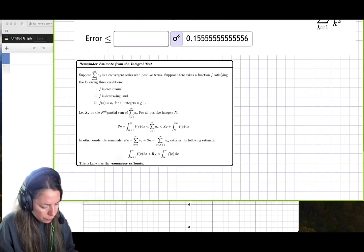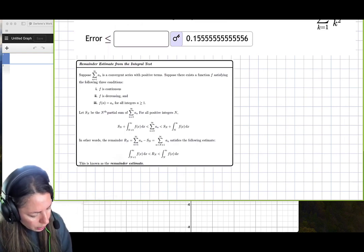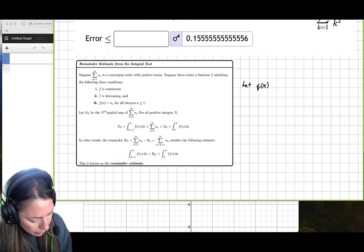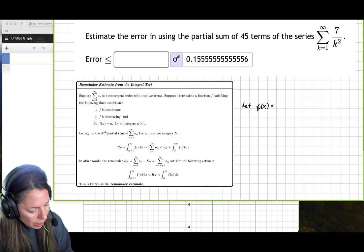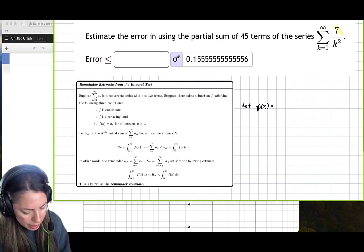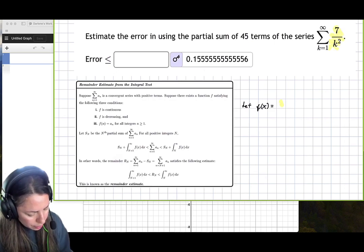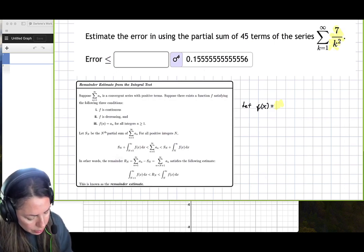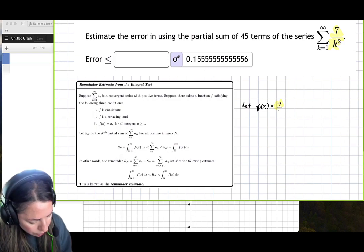So let's take a look at what those are. Essentially, the first thing we have to do is we're going to say let f of x be the function of our sequence a sub n.